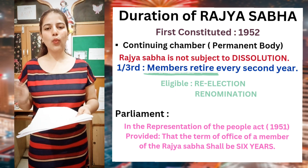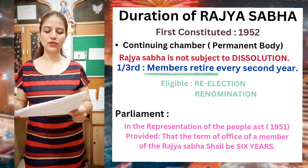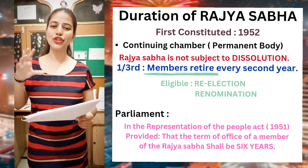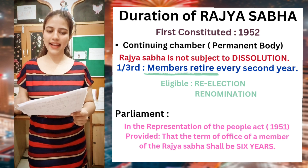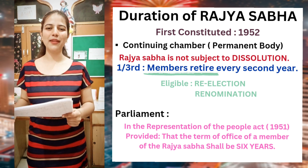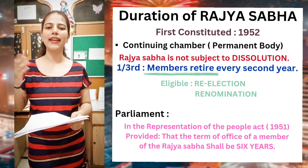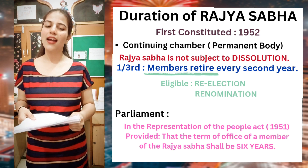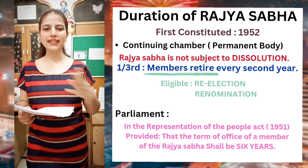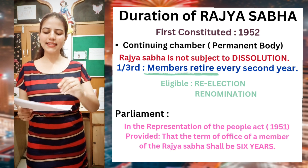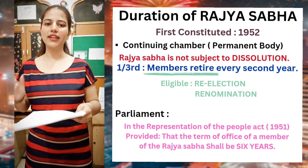However, one-third of the members of Rajya Sabha retire every second year. These retired members are eligible again for re-election and re-nomination, for any number of times. The constitution has not fixed the term of office of the members of Rajya Sabha — it has left this to Parliament. Regarding the term of office of Rajya Sabha members, Parliament has passed the Representation of People Act 1951.